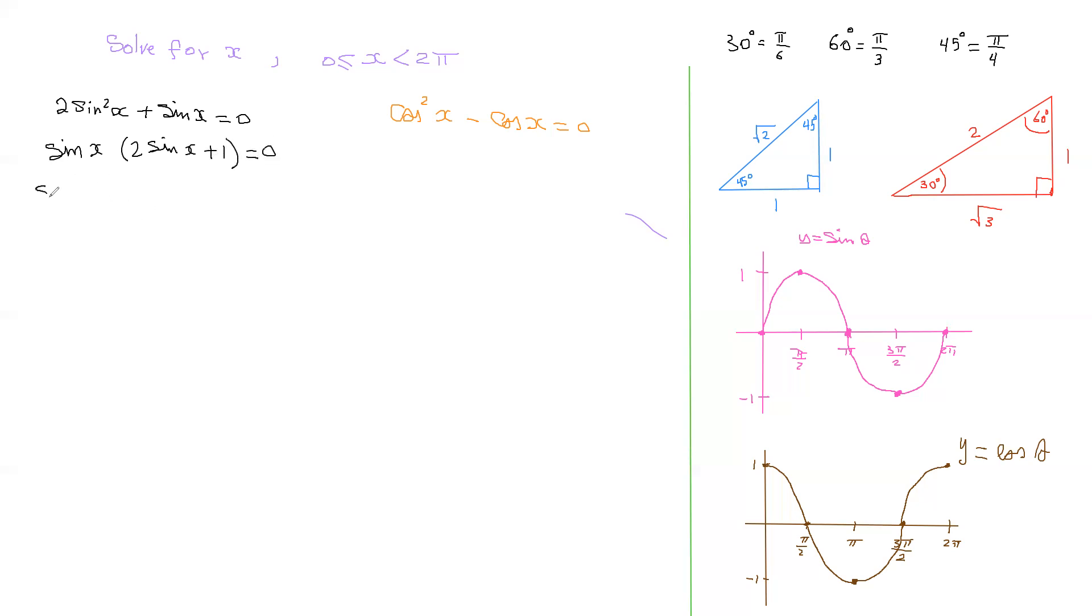Therefore sine x by itself will be zero, and this sine x will be negative half for this to give you zero. You could just take it aside and solve it. Two sine x plus one equals zero, so two sine x equals negative one. Divide both sides by two and you end up with sine x equals negative one half.